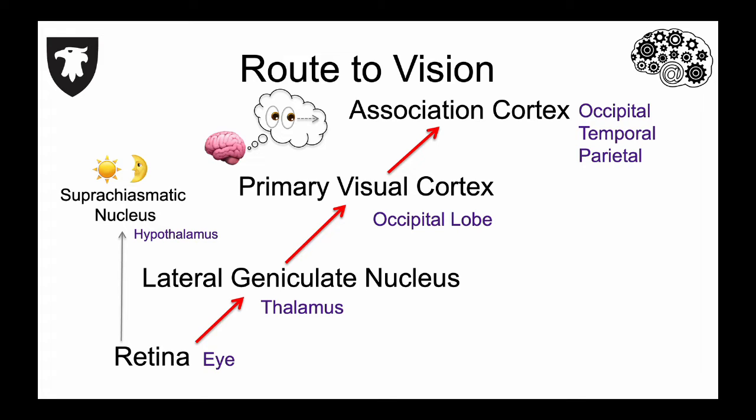This pathway has nothing to do with visual perception, but rather serves as a light detector so the SCN can use this information about the light-dark cycle to schedule activities such as eating and sleeping.